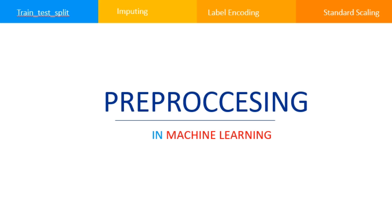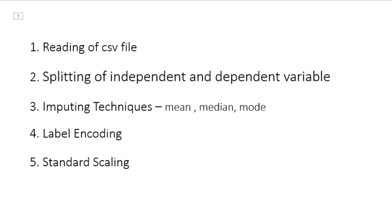The topics which we are going to cover in these videos are: how to read a CSV file in Python, how to split independent and dependent variables in Python, and how to use imputing techniques. The role of imputing techniques is that it is not always possible to get a completely filled dataset — sometimes there may be raw facts and figures that are missing, and at that time we may fill them with the appropriate mean, median, or most frequent value. We will also be covering label encoding and standard scaling.